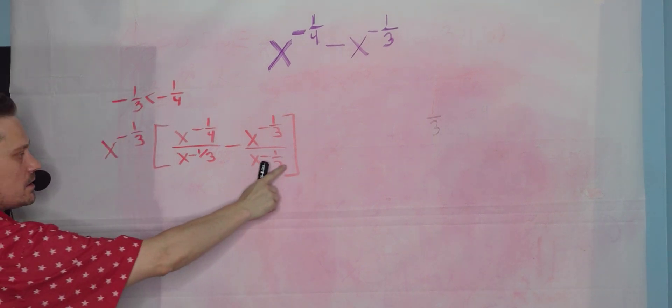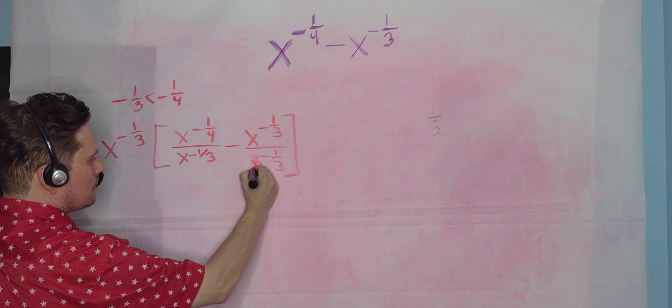All right, remember this is x to the negative one-third, not x minus one-third, let me be more clear.